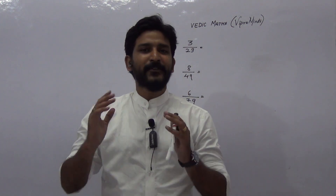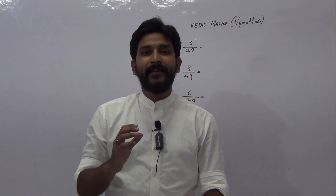Hello, welcome to Vipramind channel. Today in this session we are going to see one trick to divide any number by another number that ends with 9. That is, the divisor will be a number that ends with 9 — for example, 19, 29, 39, 79, 89, 109, and so on.